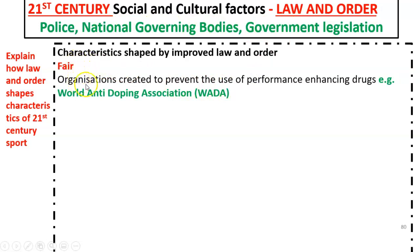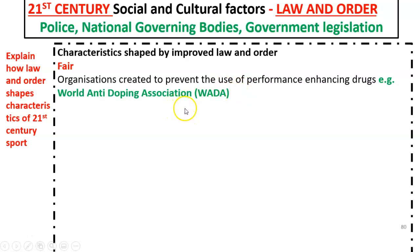Organisations are created to prevent cheating. A key example linked to performance-enhancing drugs is the World Anti-Doping Association, which is responsible for testing and banning people taking performance-enhancing drugs, therefore making sport a level playing field. As you will know from the media, this doesn't always work, but there are systems in place to try and make sport fair.